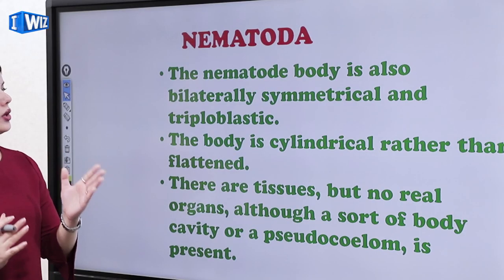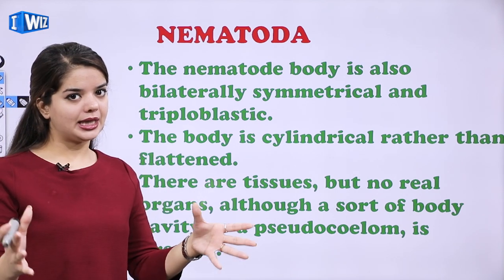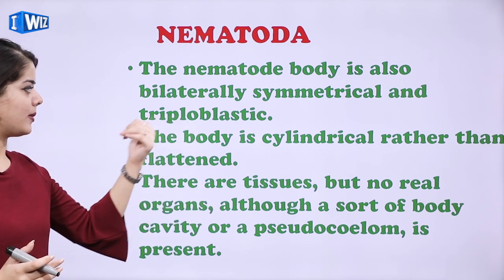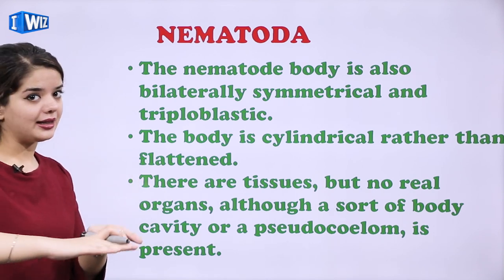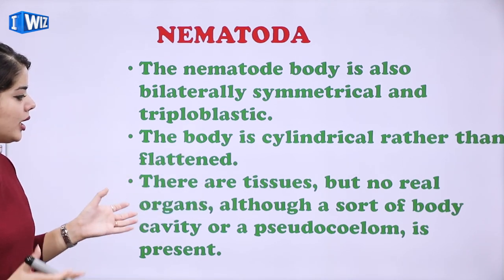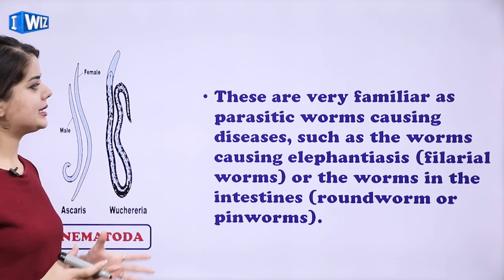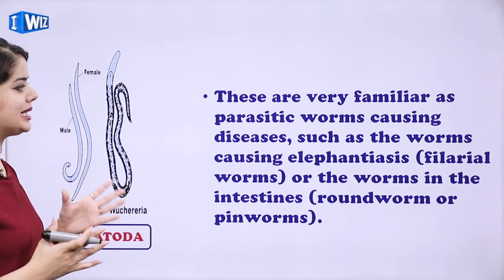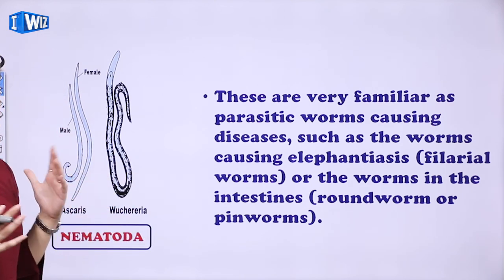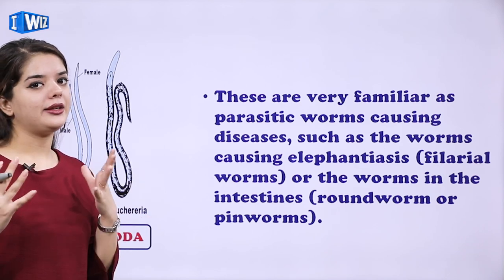Then we have Nematoda. The body is also bilaterally symmetrical and triploblastic — teen layers of cells jo differentiated tissues banaati hai. The body is cylindrical rather than flattened. There are tissues but no real organs, although a sort of body cavity or pseudocoelom is present. These are very familiar as parasitic worms causing diseases such as elephantiasis or intestinal worms like Ascaris.